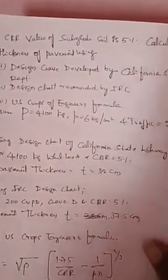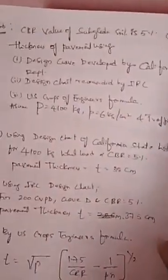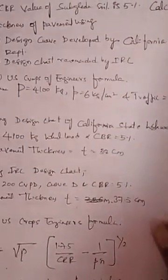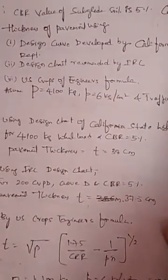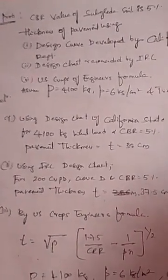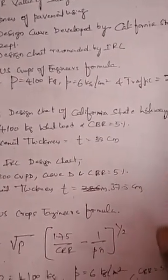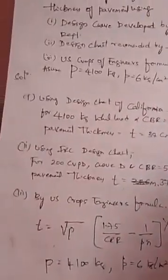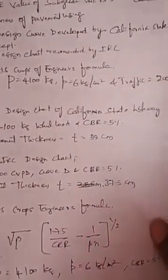We will now solve one problem to help understand the method better. The problem: CBR value of the subgrade soil is 5%. Calculate total thickness of the pavement using (1) design curve developed by California State Highway Department, (2) design chart recommended by IRC, and (3) the formula given by US Corps Engineers. Assume P = 4100 kg, tyre pressure p = 6 kg/cm², and traffic = 200 CVPD.